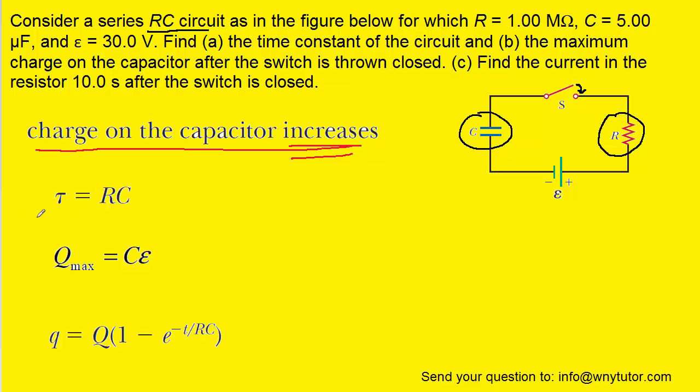Now we'll take these formulas one at a time, and it turns out actually that in part A we can use this first formula. This little Greek letter tau right here is known as the time constant, which is exactly what part A is asking us to calculate. Now that's simply the product of the resistance and the capacitance, both of which of course are stated in the question.